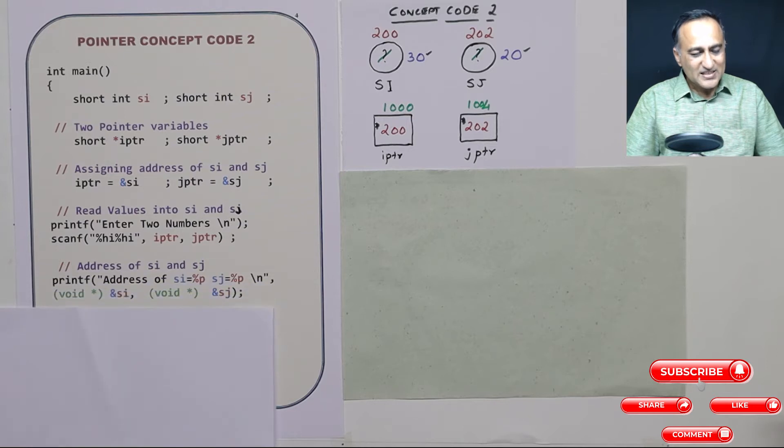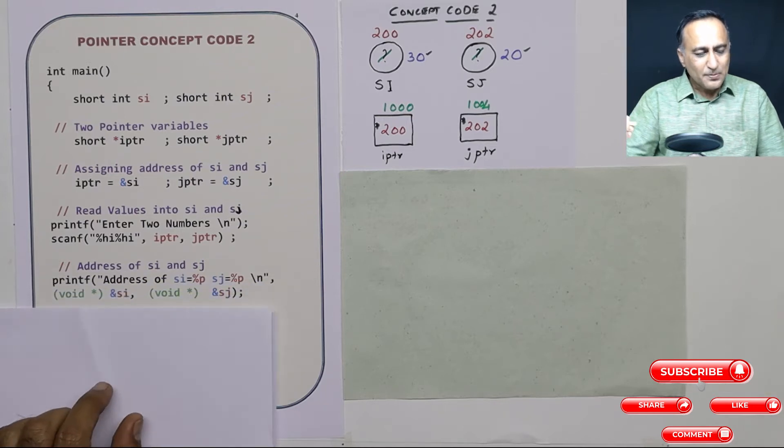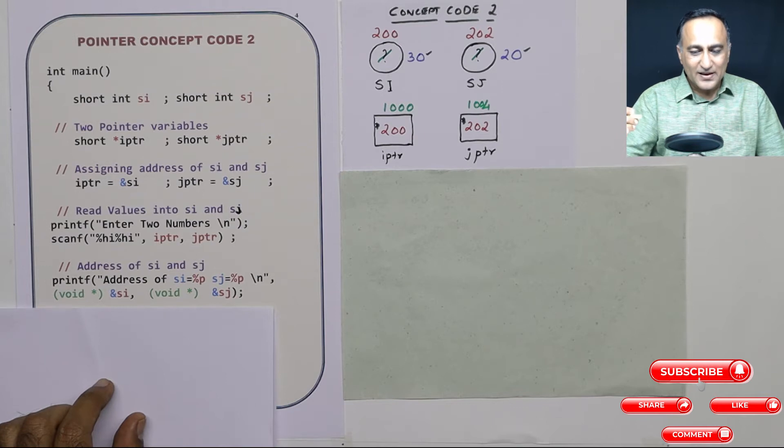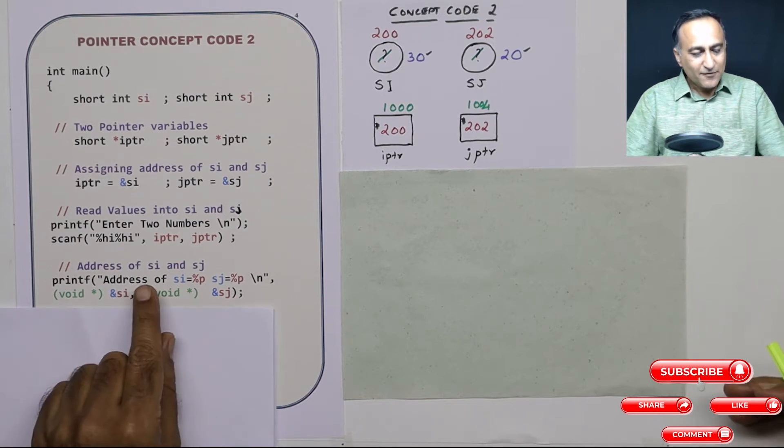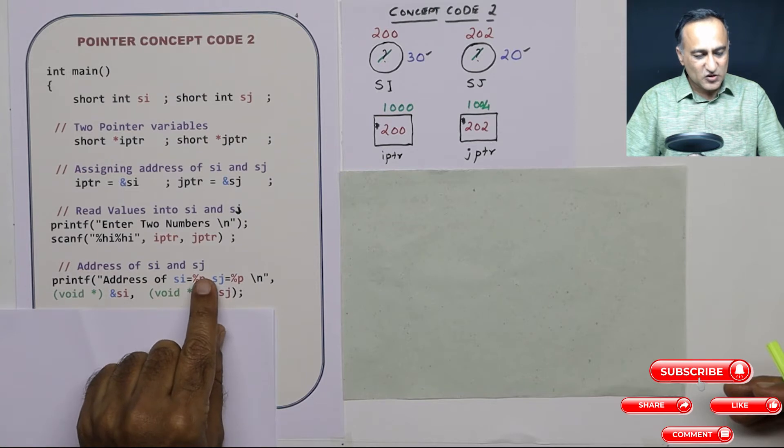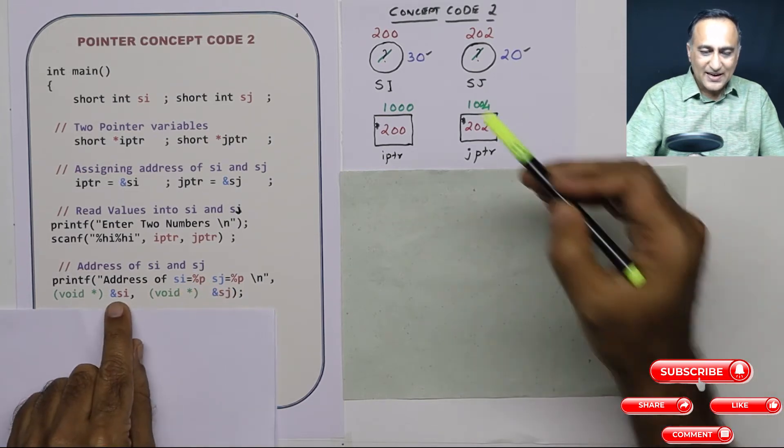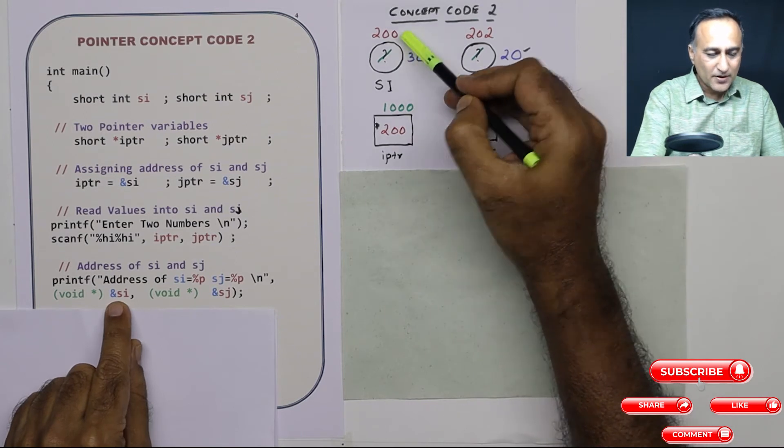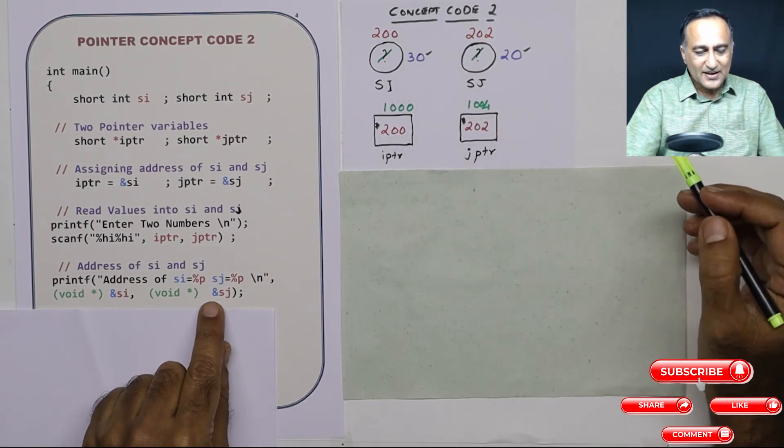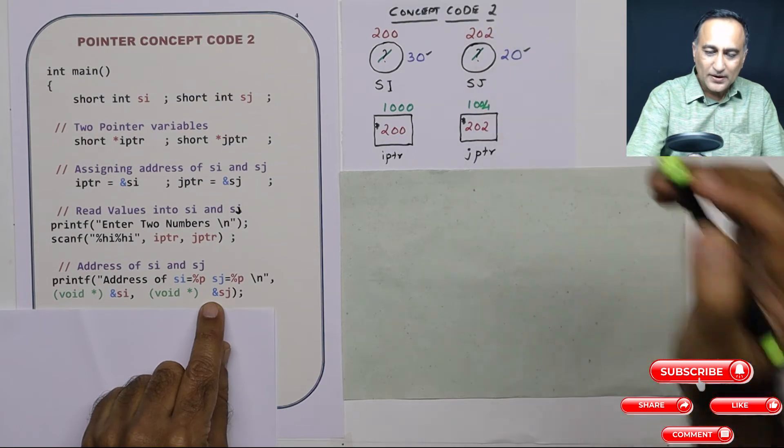Now in this next step I am simply trying to print the address of SI and sj. If I try to print the address of SI and sj through %p, address of SI it will print as 200. What is the address of sj? It will print 202.